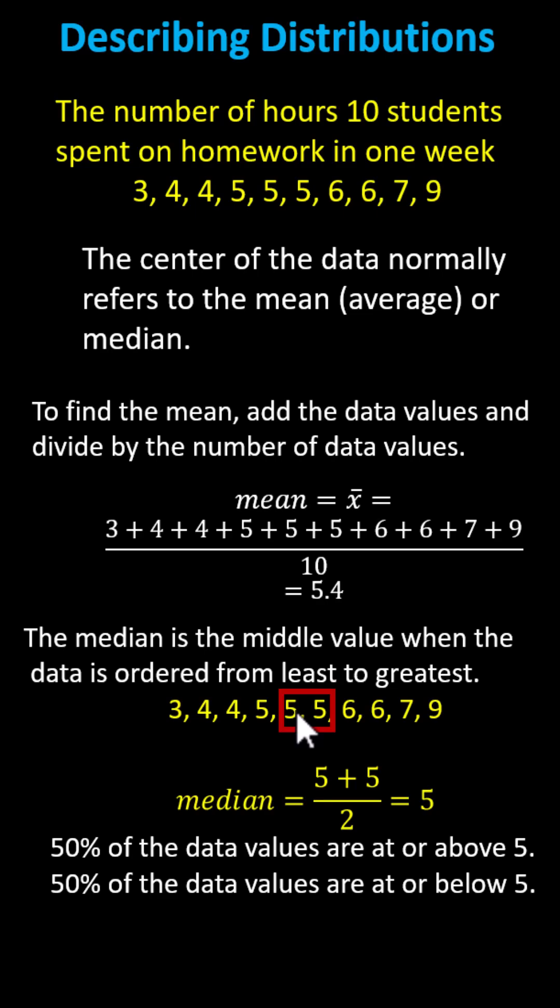Because this value is right in the middle, that indicates that 50% of all the data values are at or above 5 hours, and also 50% of the data values are at or below 5 hours.